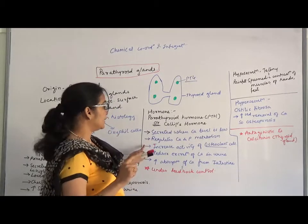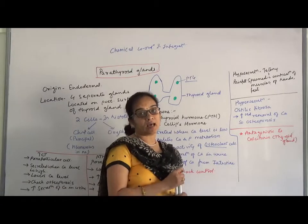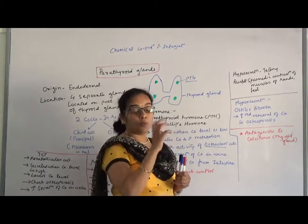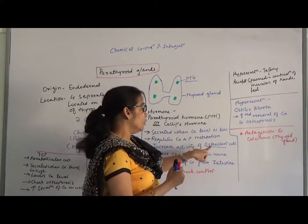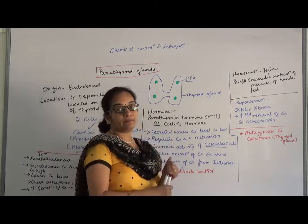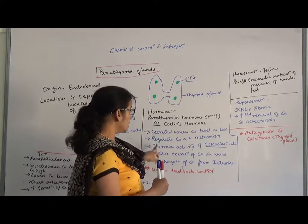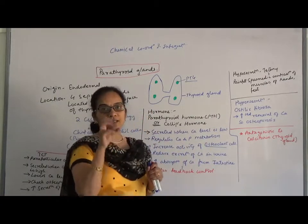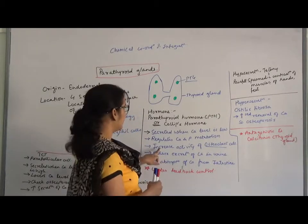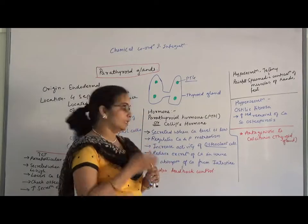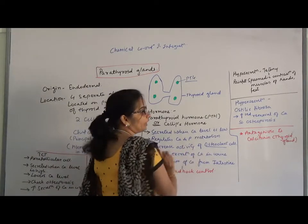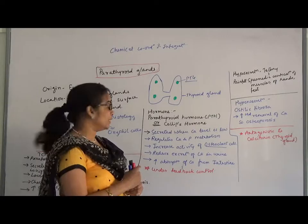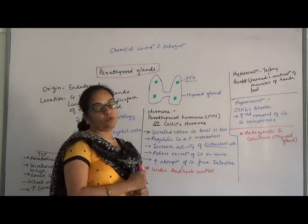Parathyroid hormone increases the activity of osteoclast cells. Osteoclast cells increase the demineralization of bones — so the rate of demineralization is increased under the influence of PTH. This is how the calcium level in the blood is increased. PTH also reduces the excretion of calcium in the urine, so calcium output via urine is reduced. It also increases the absorption of calcium from the intestine.